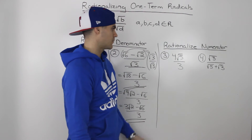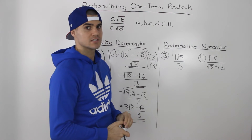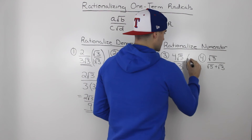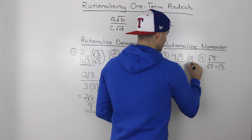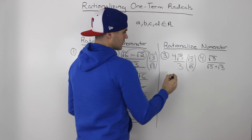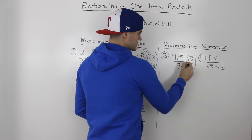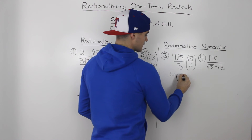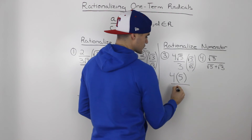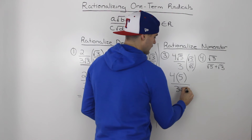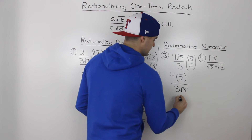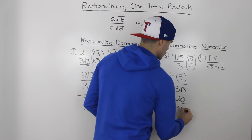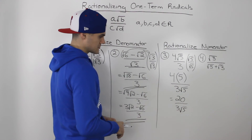Moving on to the third example: we've got 4 root 5 over 3 and we have to rationalize the numerator — get rid of this root 5. So we multiply by root 5 over root 5. In front of the root 5 there's a 1, so 4 times 1 gives us 4, and root 5 times root 5 gives us 5. Then 3 times root 5 in the denominator gives us 3 root 5. So 4 times 5 is 20 and the denominator stays as 3 root 5.